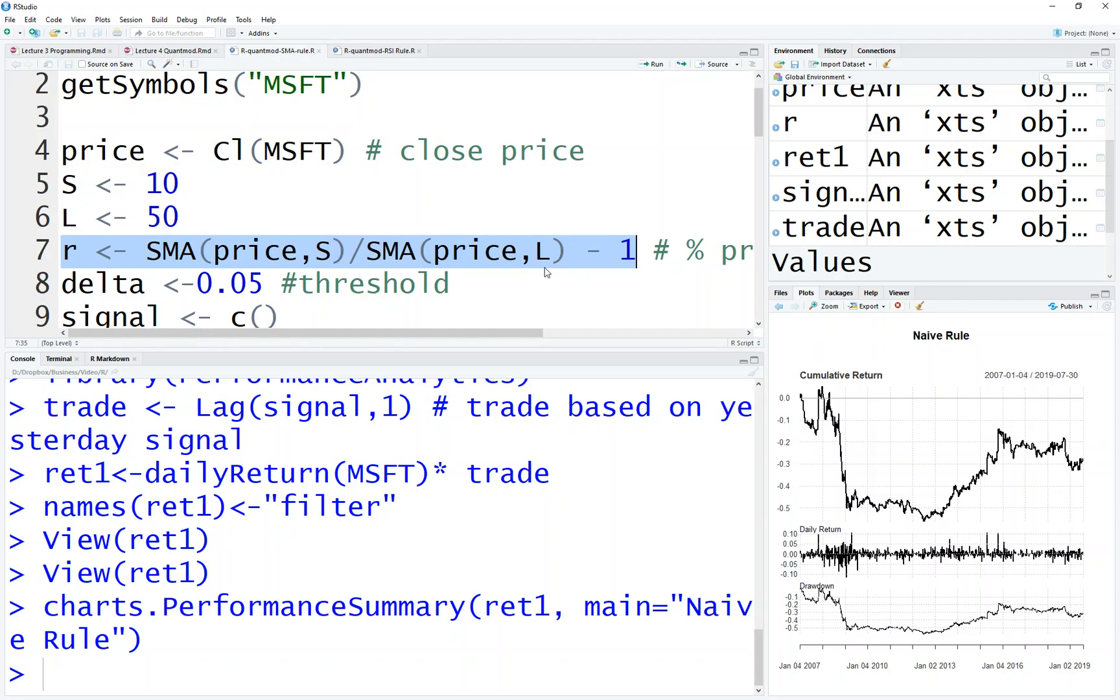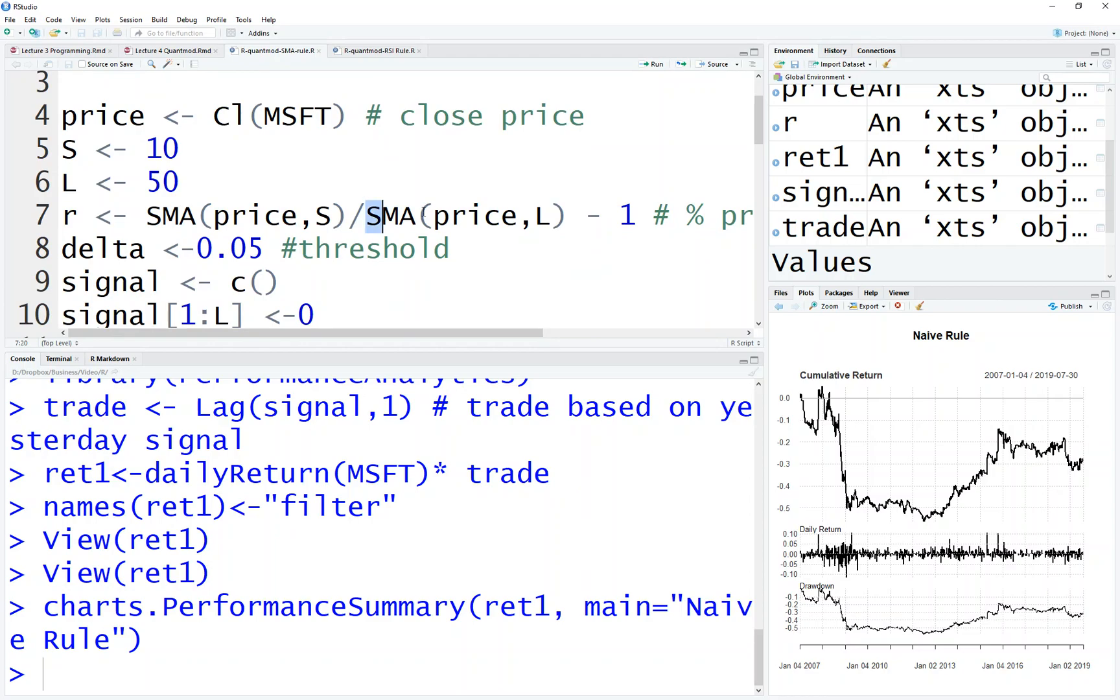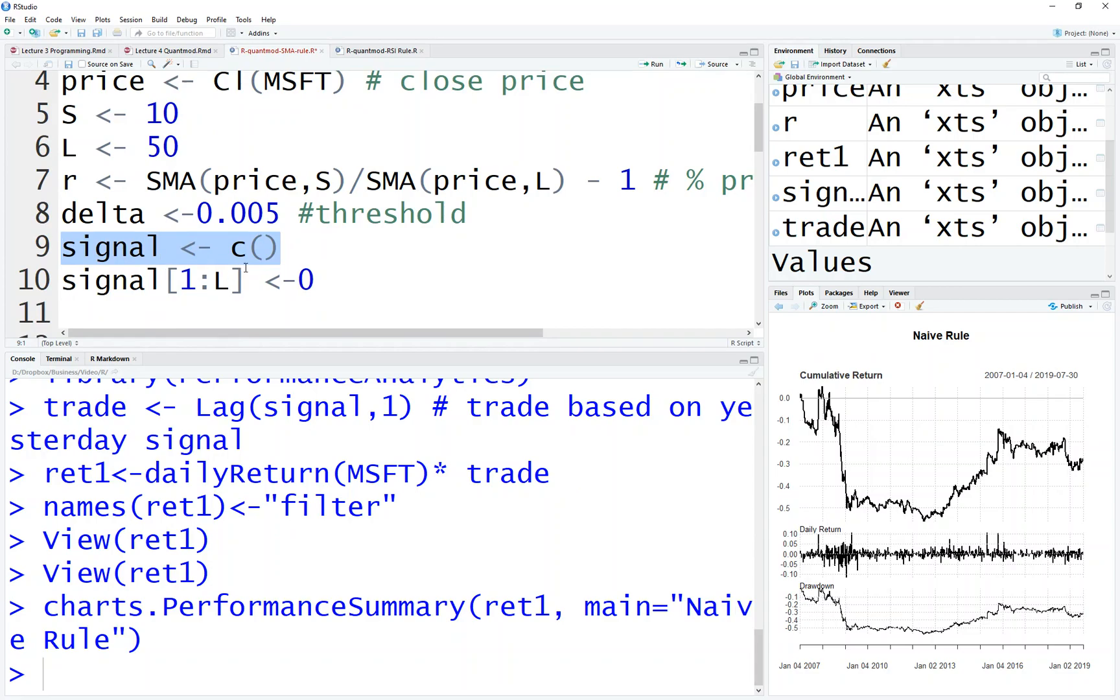So this SMA is based on the quantmod function, which gives you the data. Here delta equals 0.05, which is 5% or maybe smaller, and I define an empty signal vector.